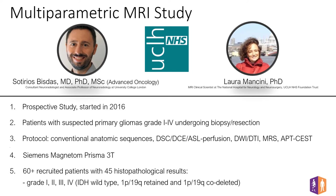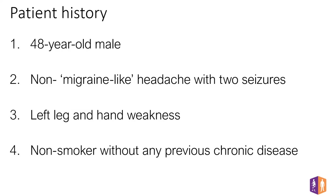To illustrate the study, I would like to present the different maps of one patient from this population, processed by Olea Sphere, and show the CEST maps to understand the role of APT in multi-parametric MRI. This patient is a 48-year-old male with a clinical history of non-migraine-like headache, followed by two seizures during the last three months before acquisition, left leg and hand weakness, and no previous chronic disease or smoking history.